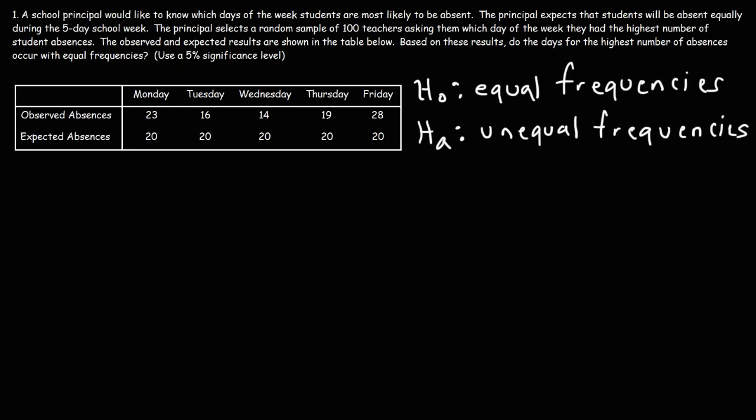The goodness of fit test is a right-tailed test. And so I'm going to draw a graph. The chi-square distribution is not a symmetrical distribution. As you can see, it's skewed.